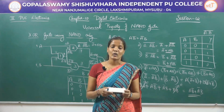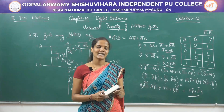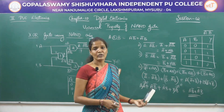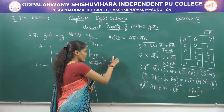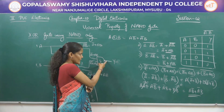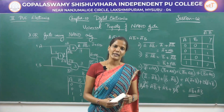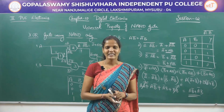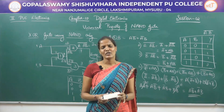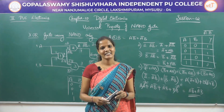So using only NAND gates we can construct all the basic gates: AND gate, OR gate, NOT gate, and also the combinational gate XOR. We can also construct an XNOR gate using only NAND — by connecting another NAND gate in front of the XOR circuit, shorting its two input terminals and giving that as a common terminal for the output. I hope you are very clear with these topics. In my next session, we will see the universal property of a NOR gate. Thank you.